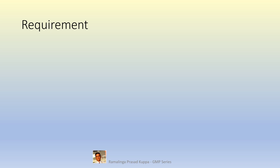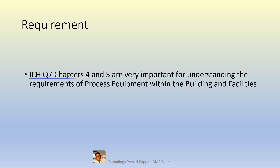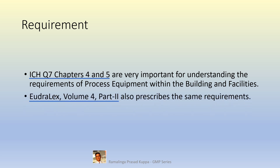Let us see the basic requirement. ICH Q7 Chapter 4 and 5 are very important for understanding the requirements of process equipment within the building and facilities. Also, EUDRALEX Volume 4 Part 2 prescribes the same requirements. These two guidelines are important for equipment maintenance and buildings requirements in pharmaceutical manufacturing.